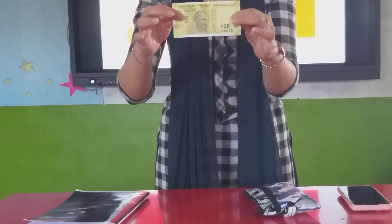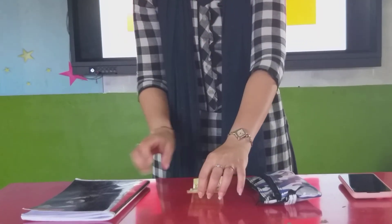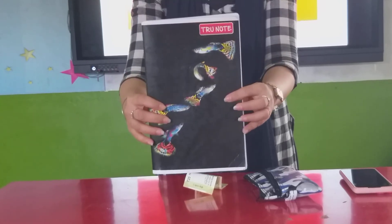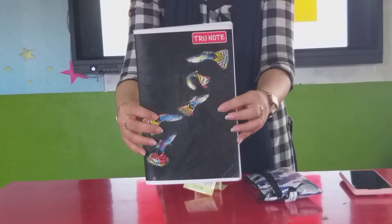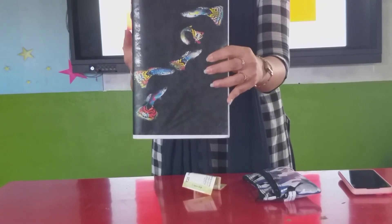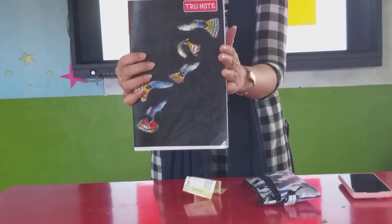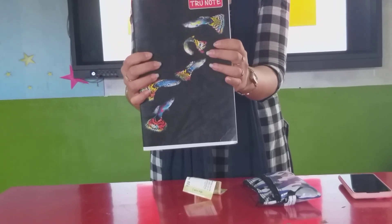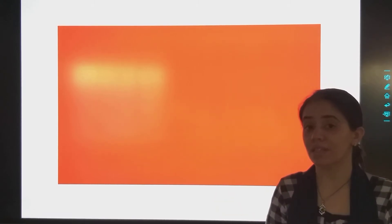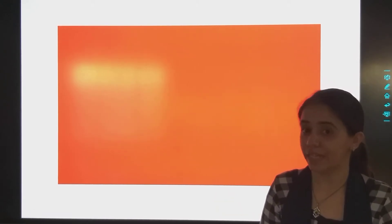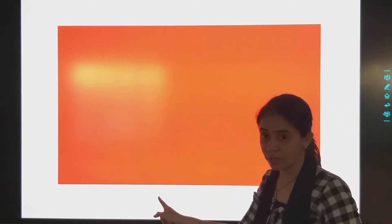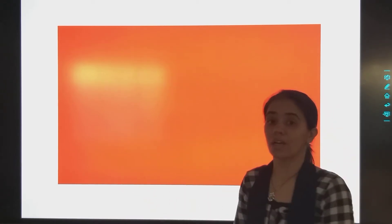Two sides ha long. Now this is a notebook — yeh kya hai? Notebook. Two sides ha short and two sides ha long. Toh kaun sa shape hai? Rectangle. So students, which shape is this? Rectangle, right? Two sides ha long and two sides ha short.